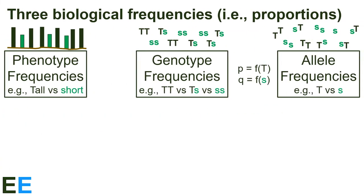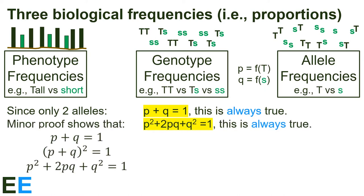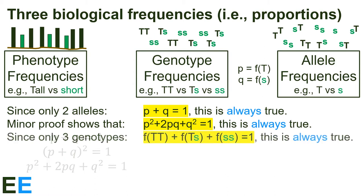Now we'll show some useful equations using the same scenario. First, since there are only two alleles, the sum of their frequencies must be 1, meaning P plus Q equals 1, and this is always true. Second, a minor mathematical proof shows that since P plus Q equals 1, then P squared plus 2PQ plus Q squared equals 1, and this is always true as well. Third, since there are only three genotypes, the sum of their frequencies must also equal 1, meaning the frequency of TT plus the frequency of the heterozygote plus the frequency of ss equals 1, and this is always true.